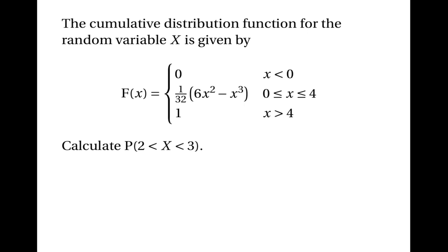Here's a typical question. We're told the cumulative distribution function for the random variable x: F of x equals 0 when x is less than 0; 1 over 32 times 6x squared minus x cubed when x is between 0 and 4; and 1 when x is greater than 4. The question is to calculate the probability that x is greater than 2 and less than 3.